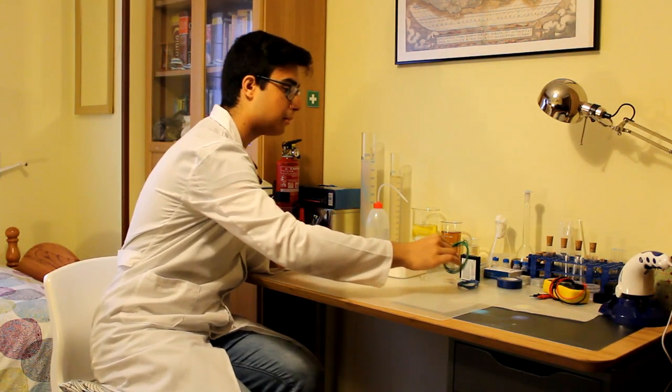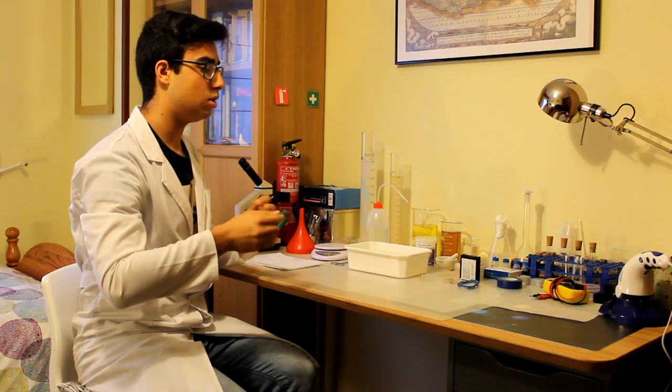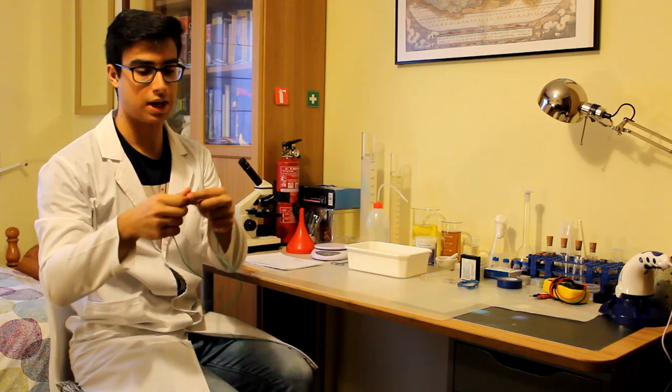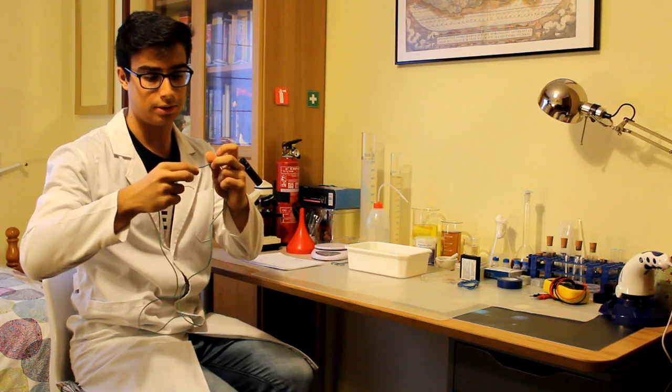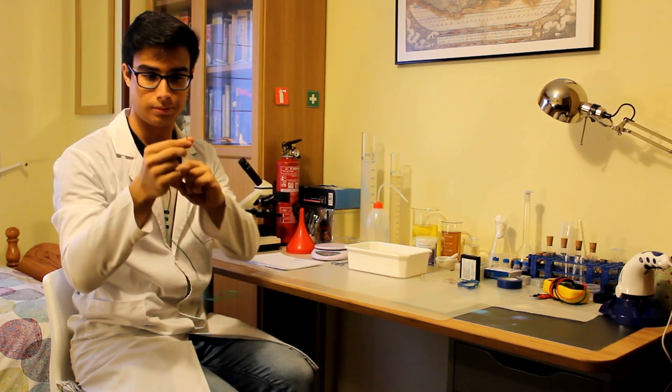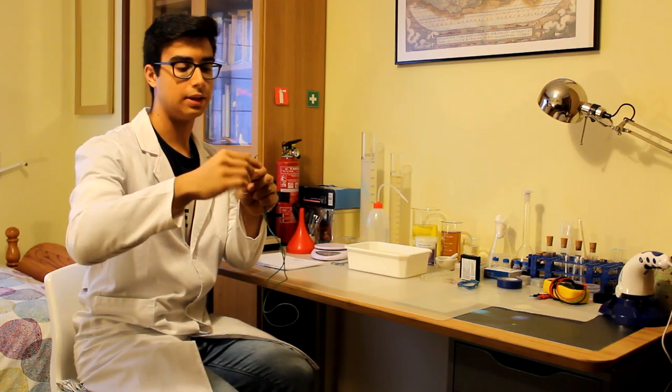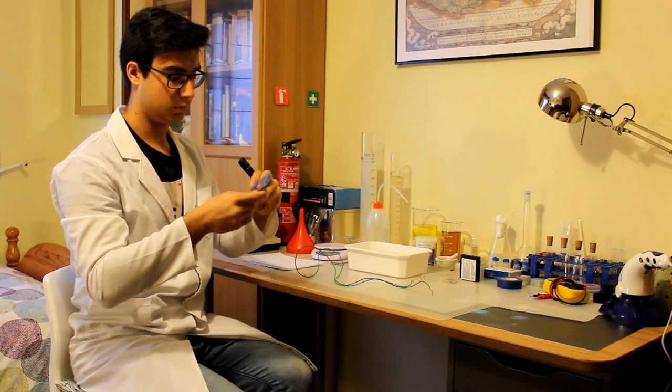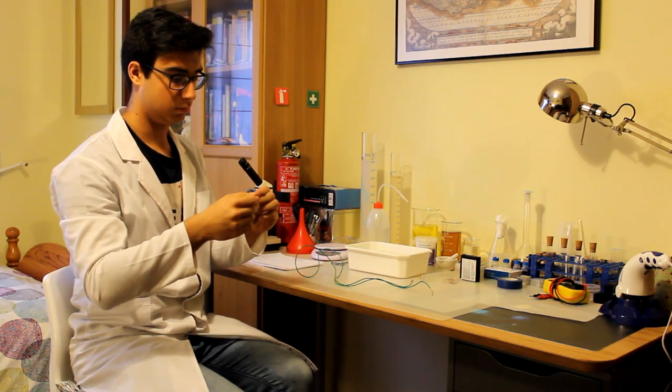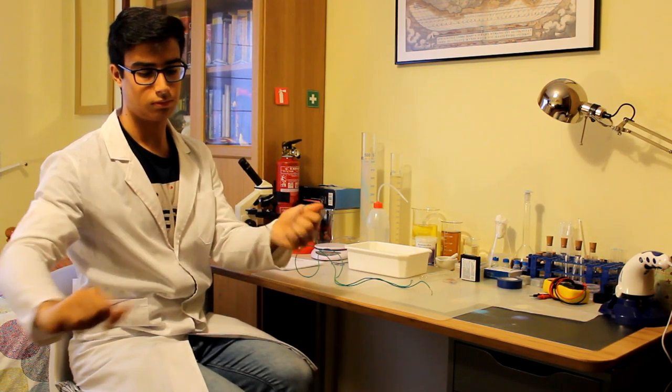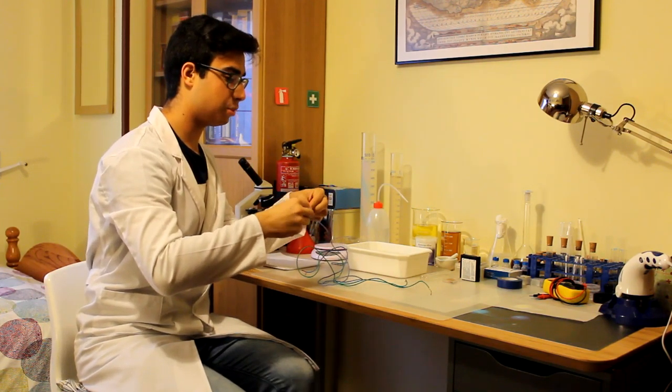Vamos allá. Lo primero que tenemos que hacer es preparar los electrodos que van a estar sumergidos en el agua. Para eso, cogemos dos trozos de cable, le pelamos las puntas. Si no sabéis cómo se hace, pedidle ayuda a un adulto. Dejamos bastante trozo de cable descubierto.